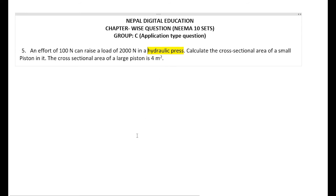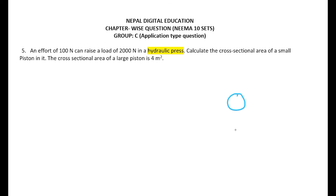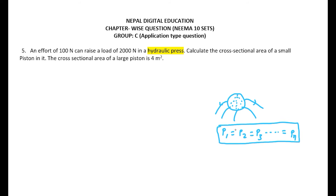Pascal's law states that pressure is transmitted equally in all directions when pressure is applied at a point on a liquid contained in a closed vessel. When we apply pressure in an enclosed vessel, it transmits equally in all directions. From Pascal's law we conclude that P1 = P2 = P3 = … = Pn, meaning all pressures are equal.